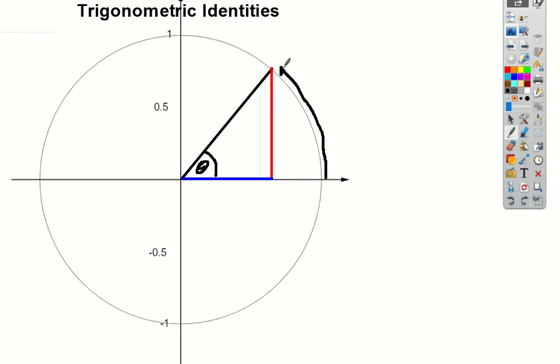And then wherever that angle stops, we define sine and cos as the y and x coordinates, respectively. So this coordinate up here that I'm on the circle with.